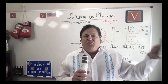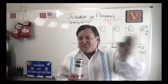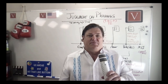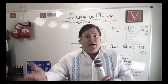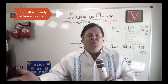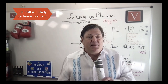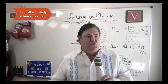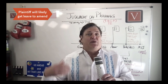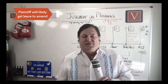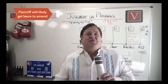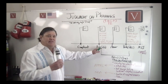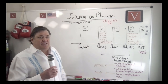If you file a 12(b)(6) motion and the court finds it's a great motion to dismiss, the court is usually obligated - if it makes sense - to allow the plaintiff an opportunity to amend the complaint. The usual rule on amending pleadings is that it shall be liberally granted in the interest of justice, so courts will usually allow amendment.